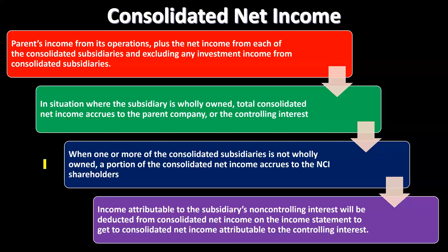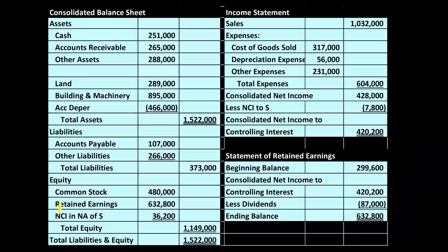Income attributable to the subsidiary's non-controlling interest will be deducted from consolidated net income on the income statement to arrive at consolidated net income attributable to the controlling interest. On the income statement, sales and expenses both include 100% of the subsidiary and parent company combined. Below that, instead of just net income, we show consolidated net income — the net income of parent and subsidiaries after removing any necessary elimination entries.